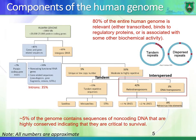Let's look at the human genome and what it is made of. We know that the human genome is composed of 3 billion base pairs. 40% of the human genome is related to genes, and 60% of the human genome is basically intergenic DNA.